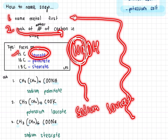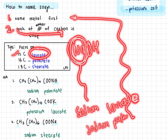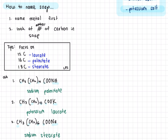If you look at the structure and there are 16 carbons, it will be sodium palmitate. If there are 18 carbons, it will be sodium stearate. But if you use potassium hydroxide instead, it's the same process: name your metal first — potassium — and if there are 16 carbons, it's potassium palmitate. This all depends on the type of metal you use and the number of carbons in the soap.